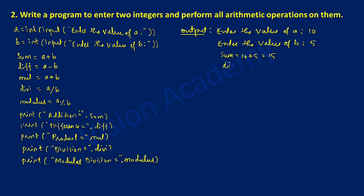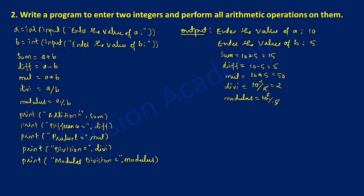Difference is equal to a minus b, that is 10 minus 5, which results in 5. Now multiplication: mul is equal to a into b, that is 10 into 5 equals 50. Now integer division: divi is equal to 10 divided by 5, so the quotient 2 is stored in the divi variable. Next is modulus — modular division always gives us the remainder. Here 10 modular division by 5: 10 is exactly divisible by 5, so the remainder is 0. Hence modulus results in 0.